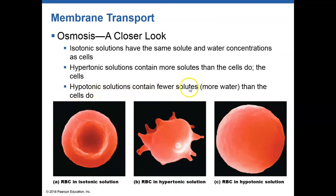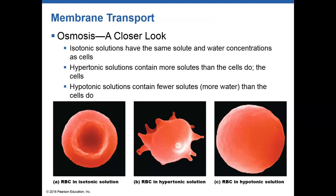A hypotonic solution contains less solute than the cell does, meaning there's more water in the environment, so water moves into the cell — where there's less water and more solute — and the cell gets very large. A memory trick: hypertonic — think of hyper children, very active and small, so the cell shrivels up and gets smaller. Hypotonic — think of hippos, which are large; the cell gets very large and can burst.